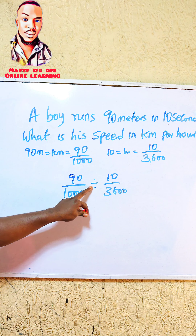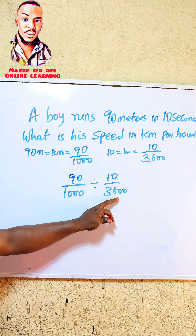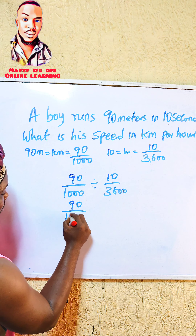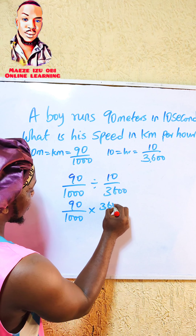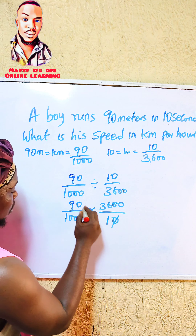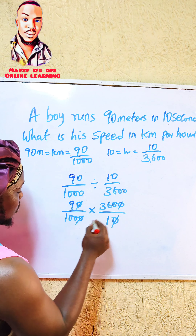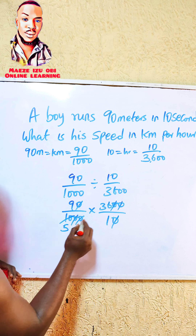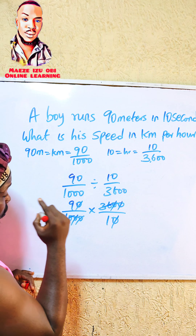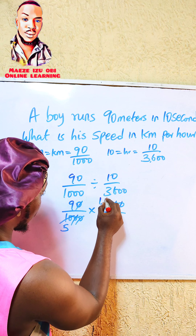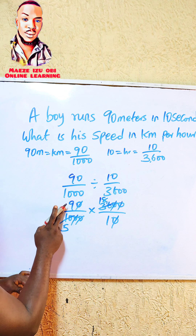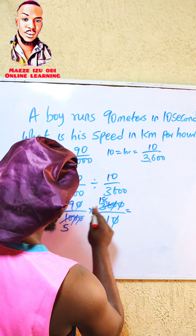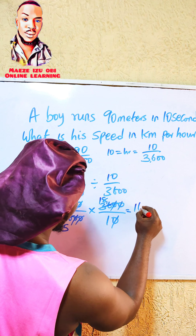So now we have 90 over 1000 for the distance and 10 over 3600 for the time. The next thing we apply is the formula for speed, which is distance over time. The distance is 90 over 1000 and the time is 10 over 3600, so speed equals 90 over 1000 divided by 10 over 3600.